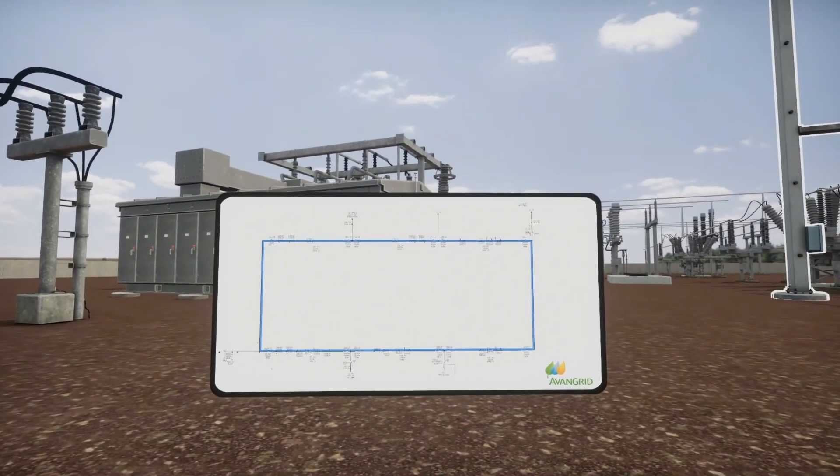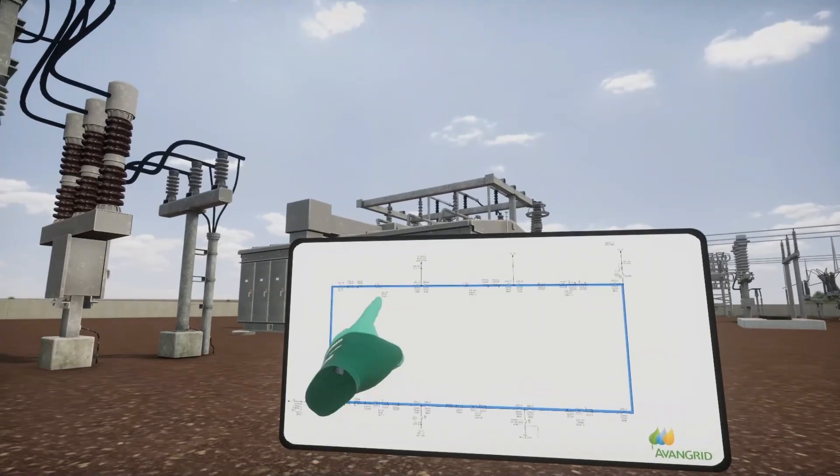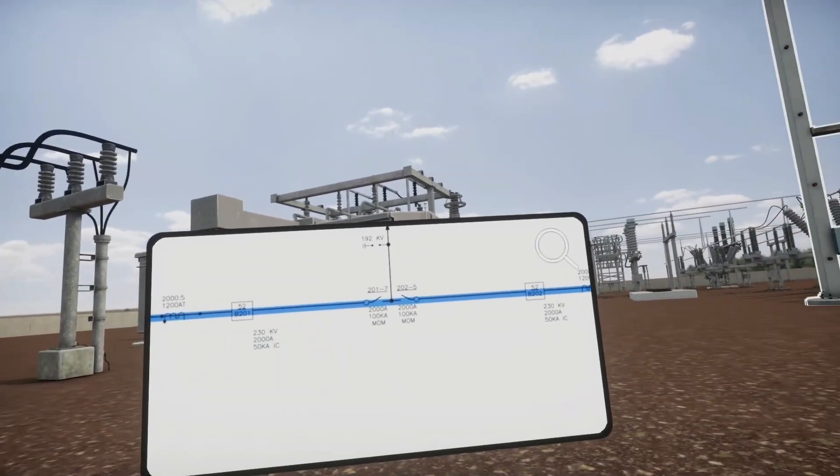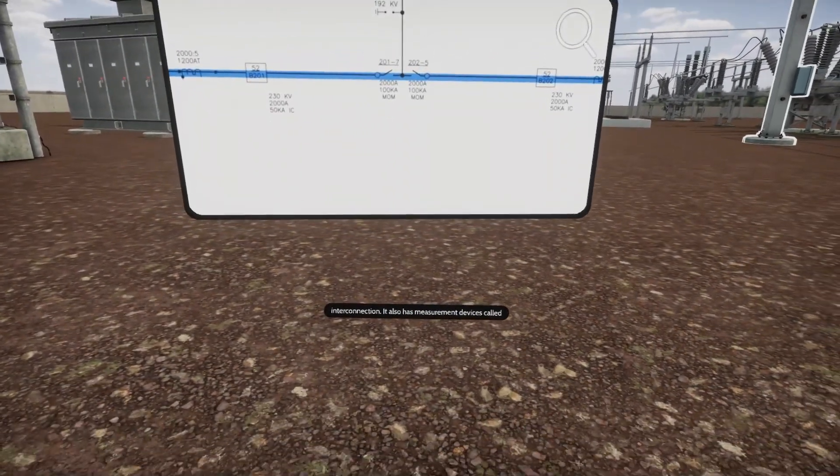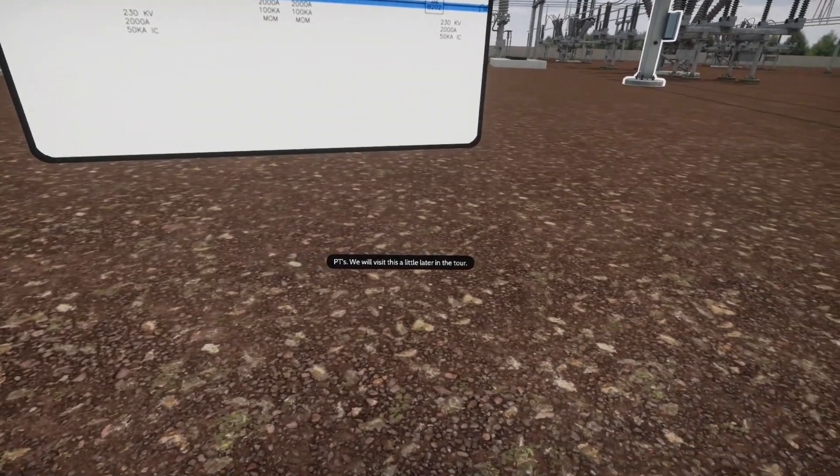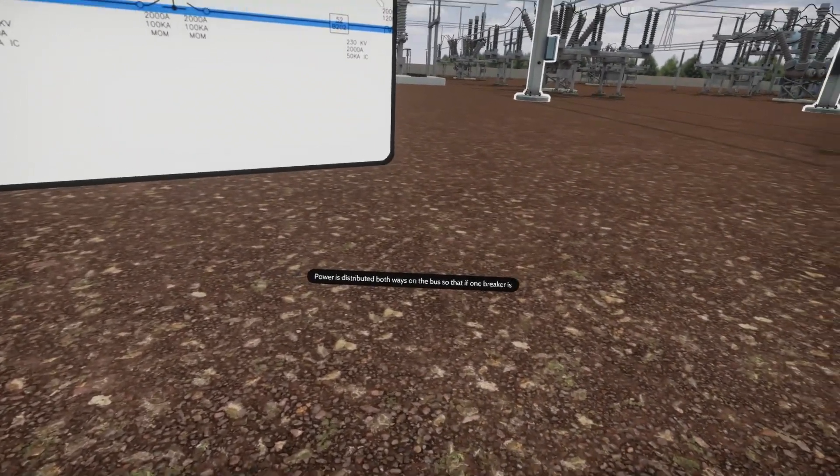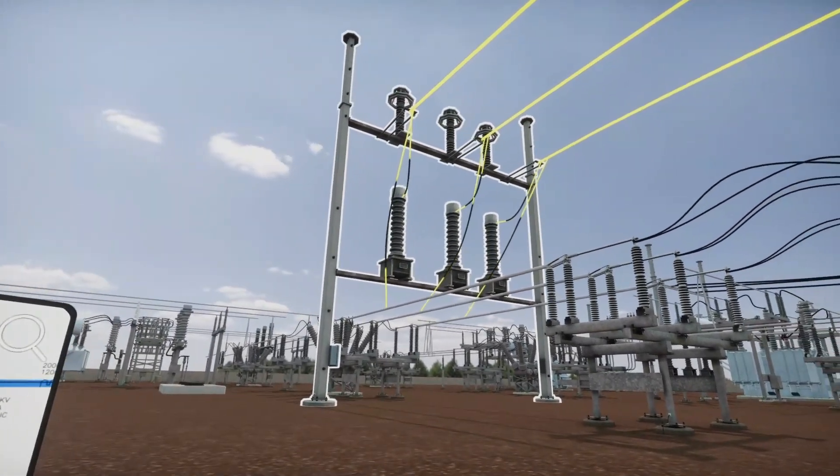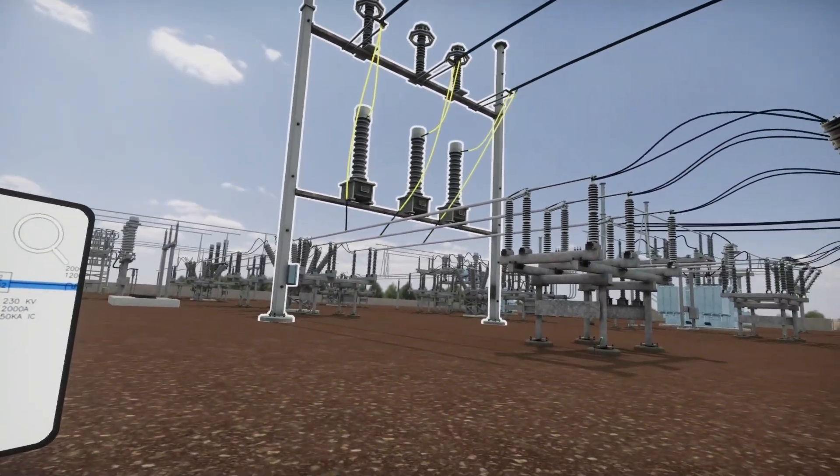Transmission lines are connected at this interconnection. It also has measurement devices called PTs. We will visit this a little later in the tour. Power is distributed both ways on the bus so that if one breaker is out of service, the circuit can still stay energized.